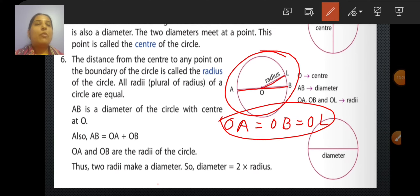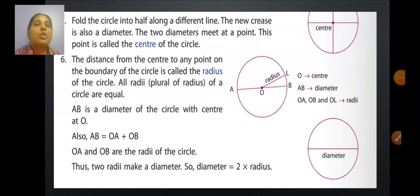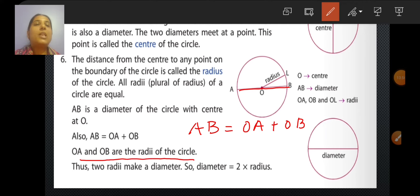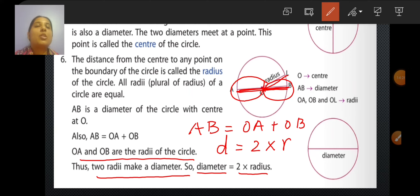AB is the diameter of this circle, and it equals OA plus OB. So the two radii OA and OB together make a diameter. This shows that the diameter is twice the radius. We can write: diameter equals 2 multiplied by radius, and radius is half of the diameter.